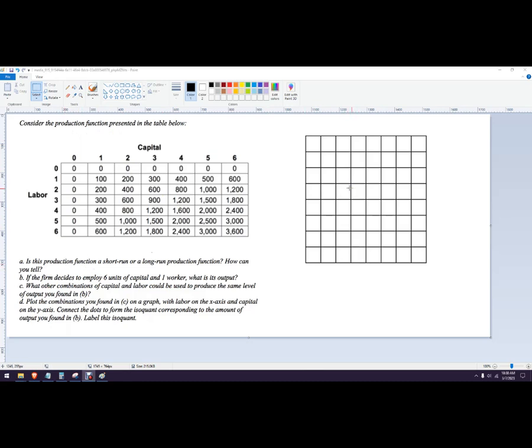Is this production function short run or long run? How do we know? We know it's long run because with two inputs we can change them both, so that means it's long run - nothing is fixed. You might see a problem where it says capital is fixed at three or something like that - that would mean you're in the short run.